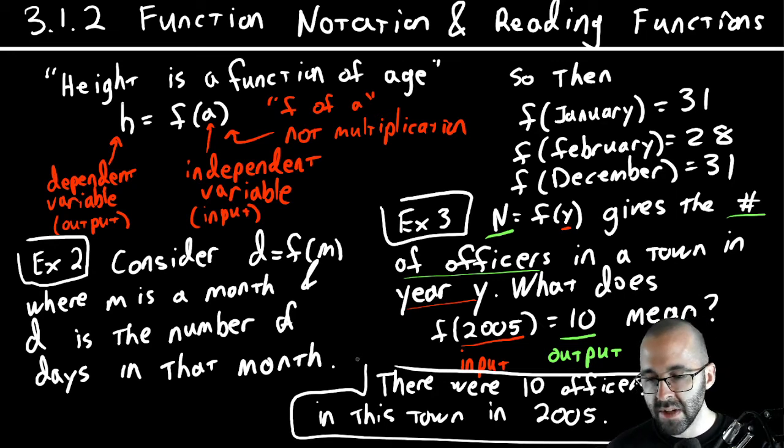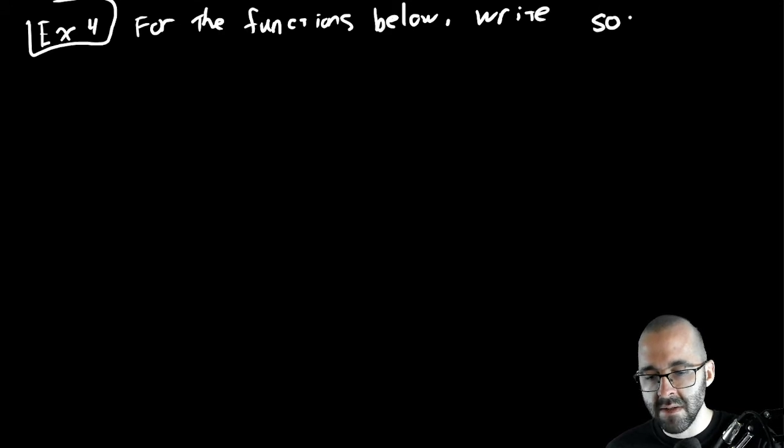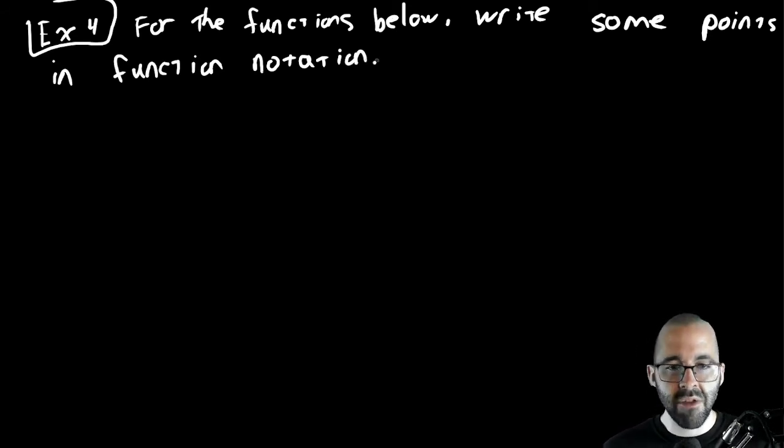We got one last one, different ways of looking at functions. Example 4 to finish off this video. It says for the functions below, write some points in function notation. So just relate these different ones, just like we've been doing before. f of x equals y is very common. That's what we're going to do here.